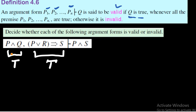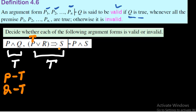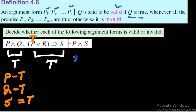Since the first premise is a conjunction, for it to be true both p and q must be true. Since p is true, p∨r is true regardless of r, making the antecedent of (p∨r)→s true. Because the whole conditional is a premise (true), s must be true. The conclusion is p∧s; since p is true and s is true, true∧true = true, so the argument is valid.